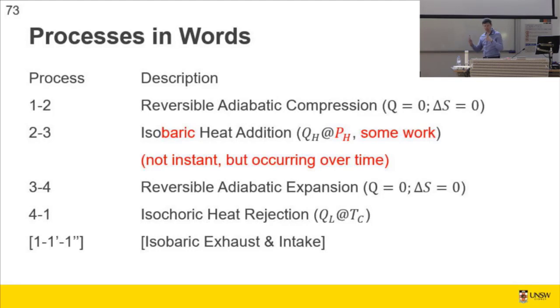And then, what we model is isochoric heat rejection, which is really the opening of the exhaust valve. So immediately, or very quickly, the pressure drops back down to atmospheric pressure, a little bit above, as it forces the gas out, and then you've got exhaust and intake. In an ideal sense, the exhaust and the intake are modeled as isobaric, so the pressure doesn't change, and you're sweeping across a known volume.